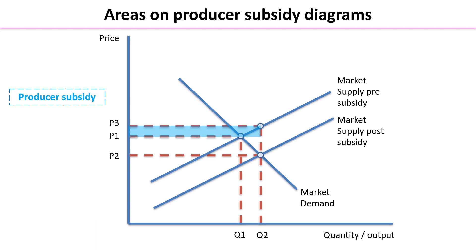Here is the producer subsidy and here is the consumer subsidy. You may be forgiven for getting those the wrong way round, because it's the opposite to taxation. The consumer subsidy is at the bottom and the producer subsidy is at the top. This becomes quite obvious when we think about it, because originally the consumers paid P1 and now they only have to pay P2. So the consumer subsidy is P1 to P2 times the new market equilibrium Q2, and P3 to P1 is the amount received by the producer times Q2. So the blue area is the producer subsidy.